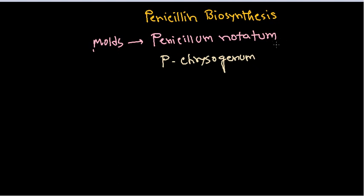We no longer rely on Penicillium notatum because it's the wild type and doesn't give good yield. In industrial production we always want a species that gives much higher yield at less cost. For that reason, we shifted towards Penicillium chrysogenum for the industrial production of penicillin.